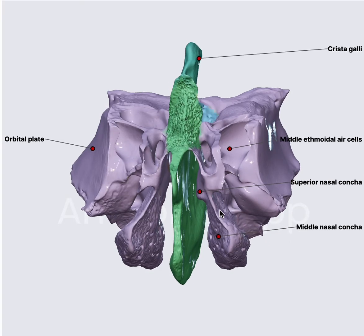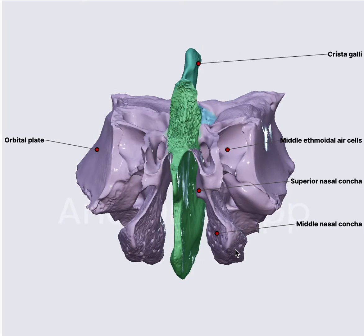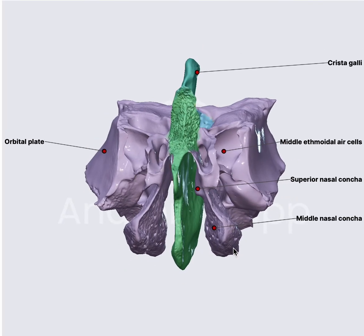As seen in the previous anatomical video, as we go superior the bony component decreases. The inferior turbinate has the maximum bony component, the middle turbinate has relatively less, and the superior turbinate has very minimal. If this gets pneumatized it will form a concha bullosa.